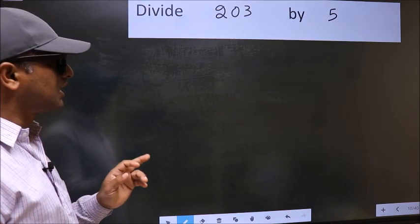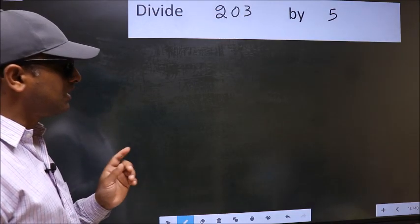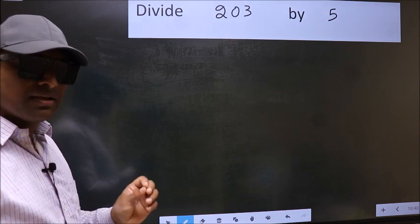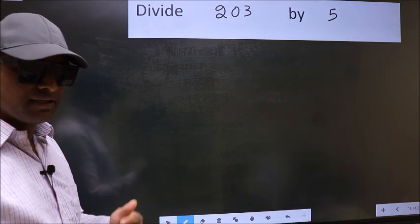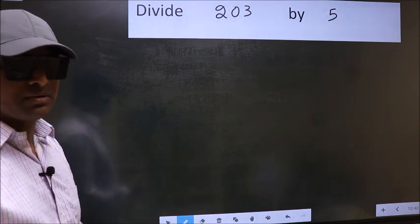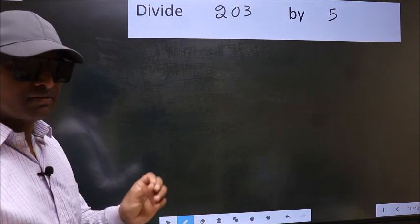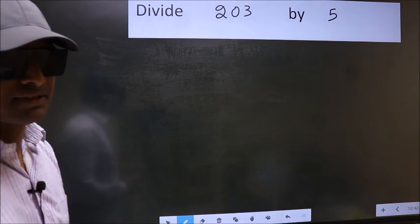Divide 203 by 5. While doing this division, many make this mistake. What is the mistake that they do? I will let you know. But before that, we should frame it in this way.